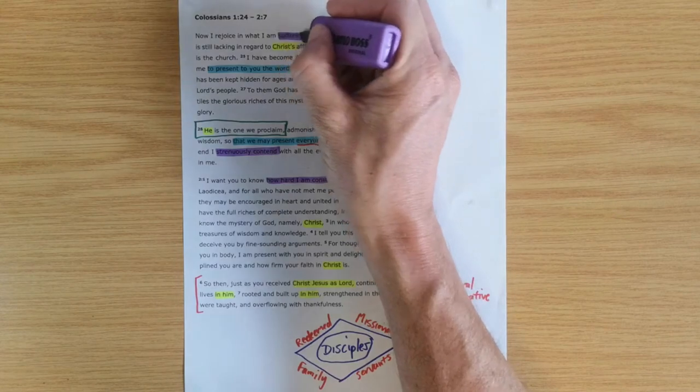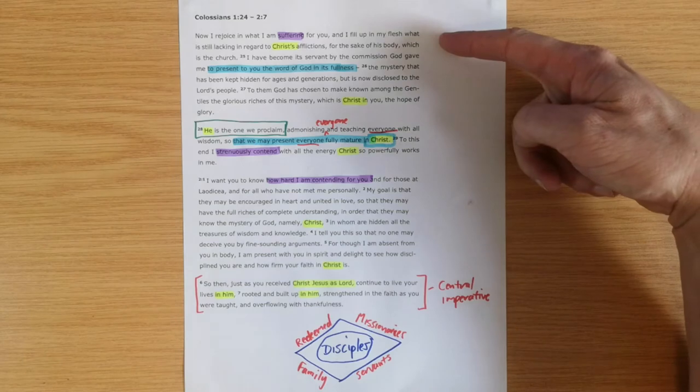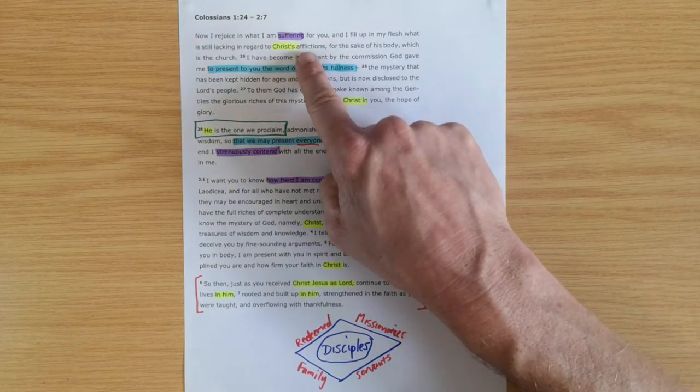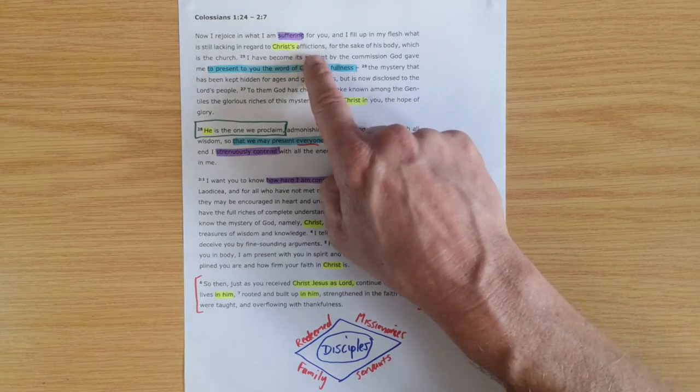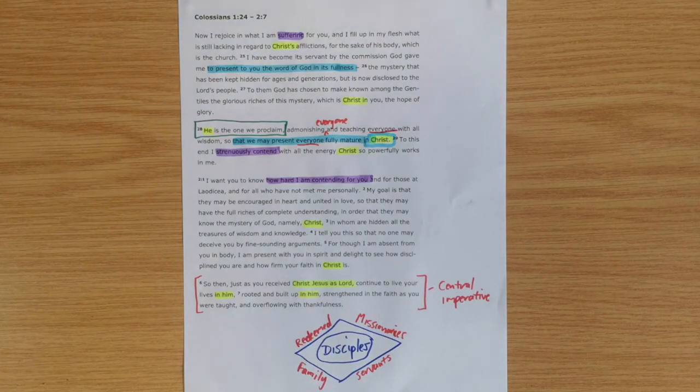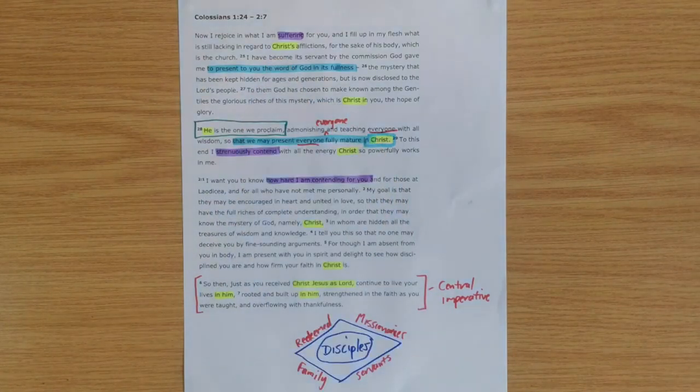He speaks about his suffering for them. Now, a quick note on verse 24: he says, 'what is lacking in regard to Christ's afflictions.' We need to be very clear that Christ's sufferings are a hundred percent sufficient to secure salvation for his people.